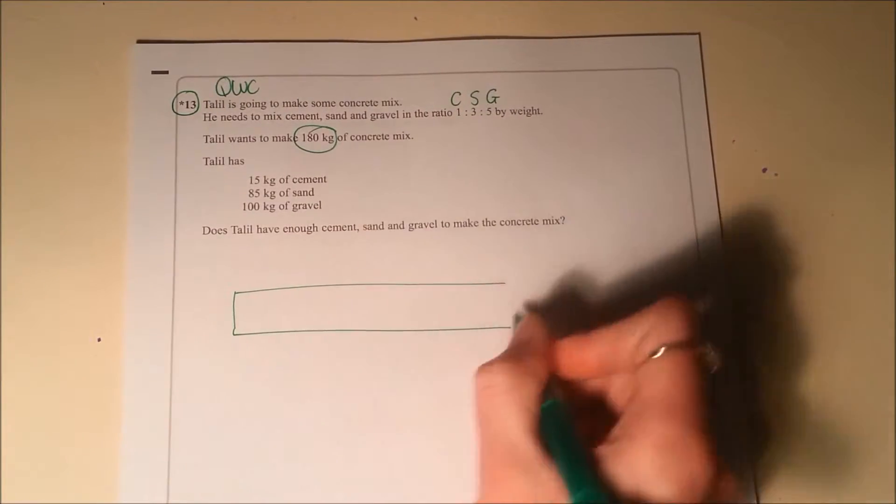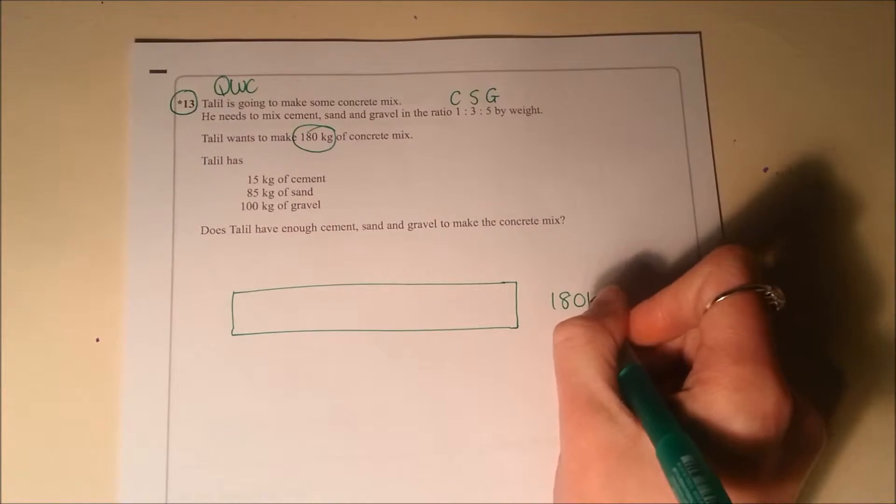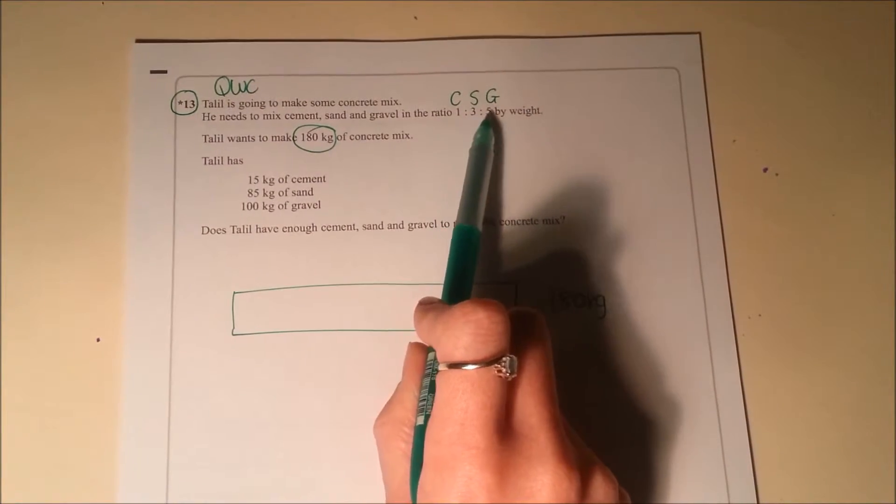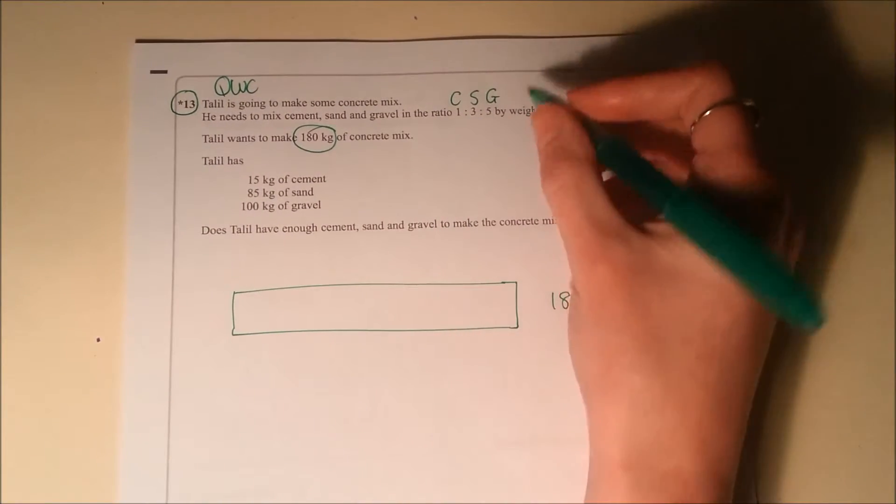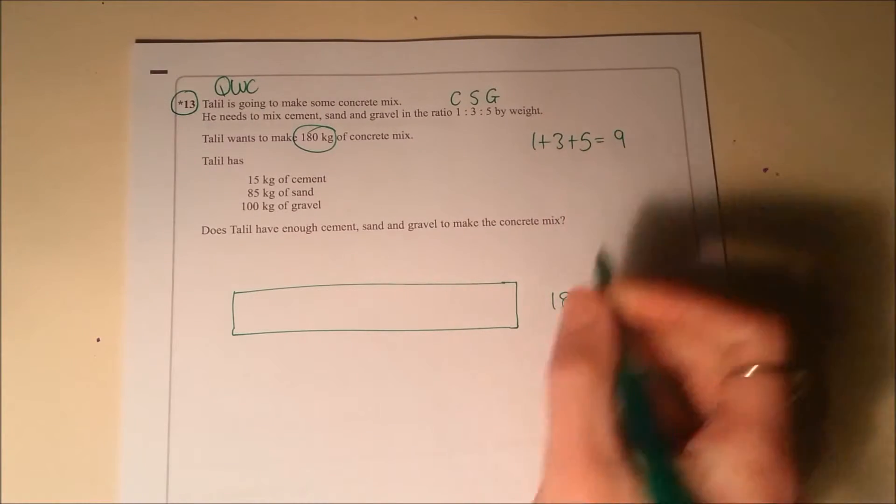So if we draw a bar for his total, that's 180 kilograms. And he's splitting this into 1, 3, 5 parts. So in total there we've got 9 parts.